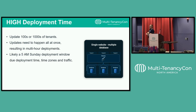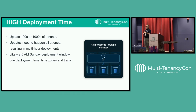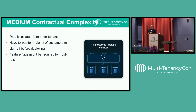Deployment time was another challenge once we had 100-plus tenants — we had to update every single tenant's database because everyone was using the same code, all at once. If you enjoy getting up at 2 a.m. on Saturday or 5 a.m. on Sunday to update the schema for every customer and then update the actual code, then this approach is for you. And for contractual complexity, although data is isolated from other customers, if tenants have sign-off requirements you still don't have a good way of handling that — so you're back to the feature flag approach.